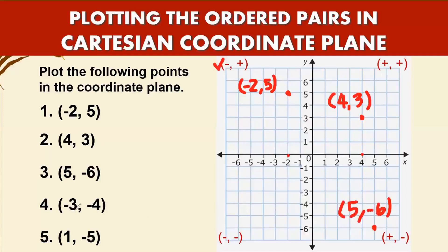Number four: negative three, negative four. Both are negative, so this will be in quadrant three. From zero, go to your left to negative three, then go down to negative four. Label the point negative three, comma negative four.